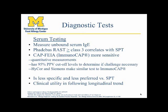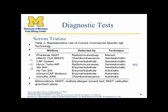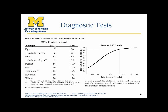Use of the word RAST should be discouraged — everything sold now is fluorescent-based. Hugh Sampson, in studies published in 1997 and 2001 from his atopic dermatitis population at Johns Hopkins, looked at where somebody's immunocap level was at the time of challenge and correlated a probability to the challenge outcome. You either pass or fail a challenge, and you can correlate that through a receiver-operator characteristic curve, plotting true positive versus false positive.